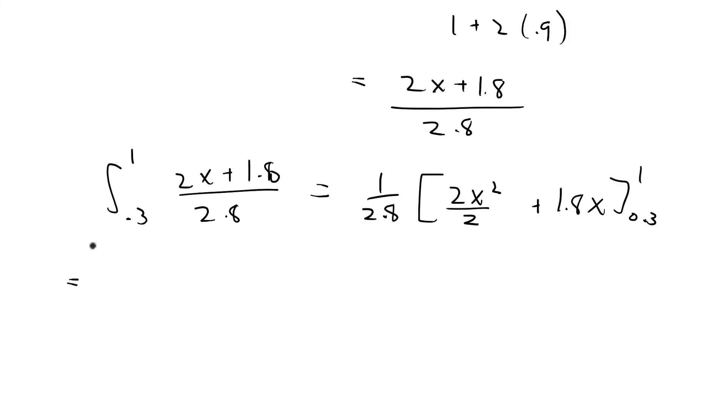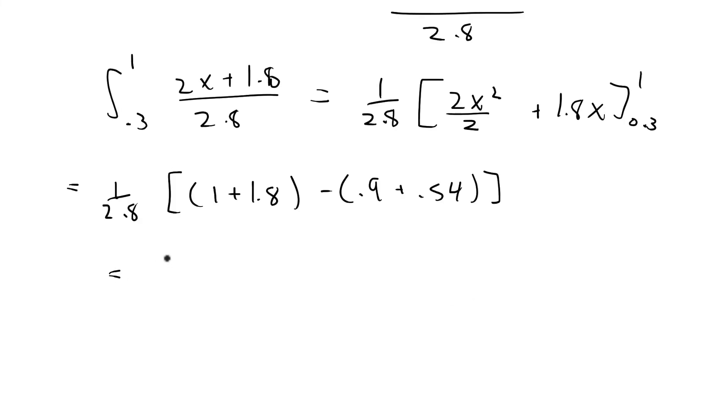If I plug in 0.3 and 1, that's going to give me 1 over 2.8 of 1 plus 1.8 minus 0.9 plus 0.54